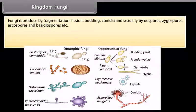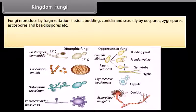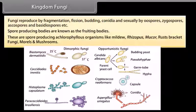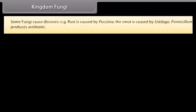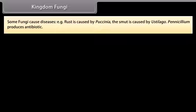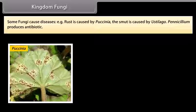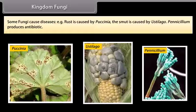Fungi reproduce by fragmentation, fission, budding, conidia, and sexually by oospores, zygospores, ascospores, basidiospores, etc. Spore-producing bodies are known as fruiting bodies. These are spore-producing achlorophyllous organisms like mildew, rhizopus, mucor, rusts, bracket fungi, morals, and mushrooms. Some fungi cause diseases — for example, rust is caused by Puccinia, the smut is caused by Ustilago, and Penicillium produces antibiotic.